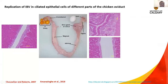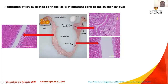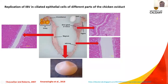IBV could replicate in the ciliated epithelial cells of different parts of a chicken oviduct. As you can see here, this is the oviduct in its whole length with different parts — magnum, isthmus, and shell gland or uterus — and their epithelial lining, as indicated by the red arrows. Occurrence of pathology in this epithelial lining during IBV infection could result in chickens producing eggs with shell abnormalities, as you can see here.